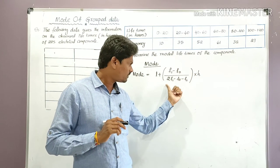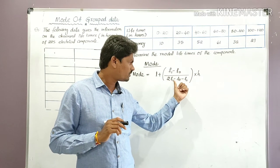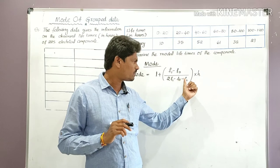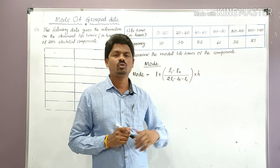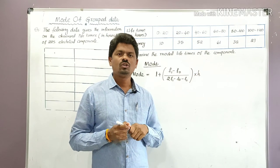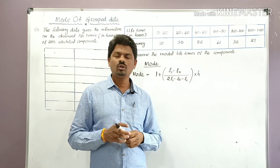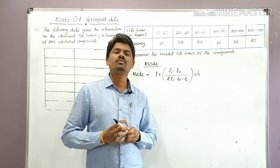Mode is equal to L plus F1 minus F0, divided by 2F1 minus F0 minus F2, into H. Students, you have to remember this formula and the terms involved in it.